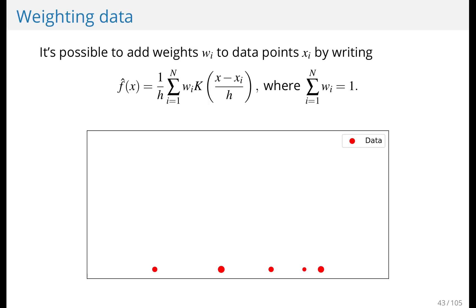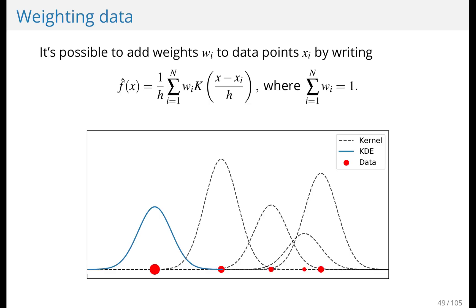And what you do is you replace the one over n with weights, and you assign a weight to every data point. And you should ensure that the sum of the weights equal one, so that the integral of your estimate equals one in the end. And apart from that, it's the same thing. You add kernels, and you weigh them. So they can look a bit different, and then you sum these together. And this is your final estimate. So pretty straightforward.